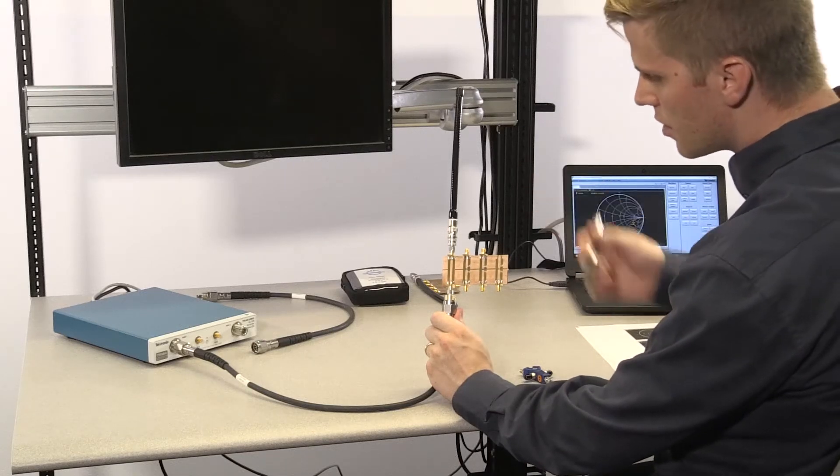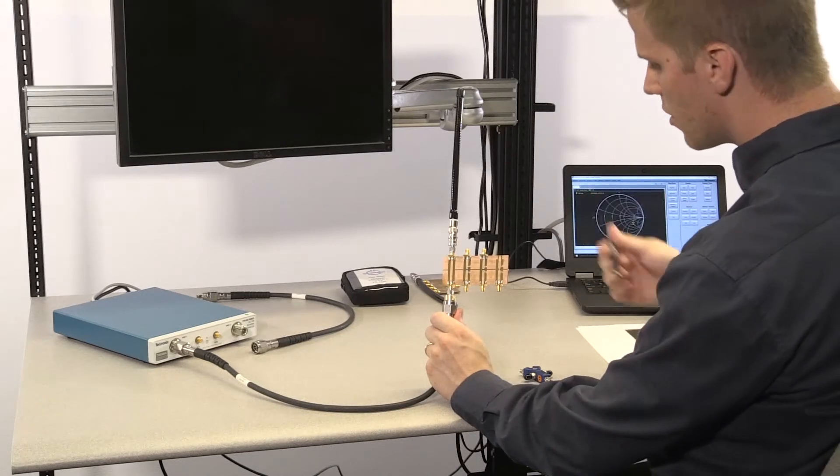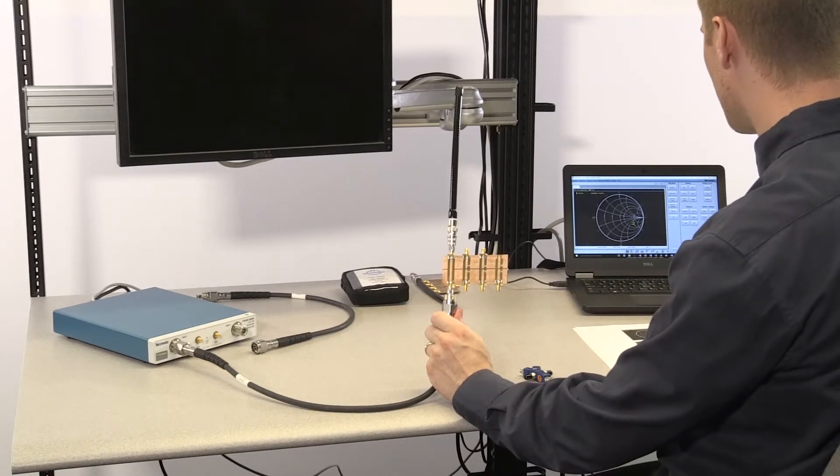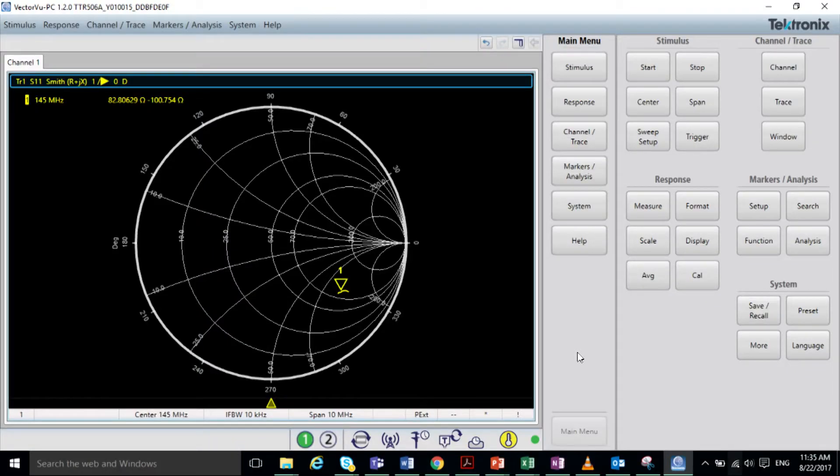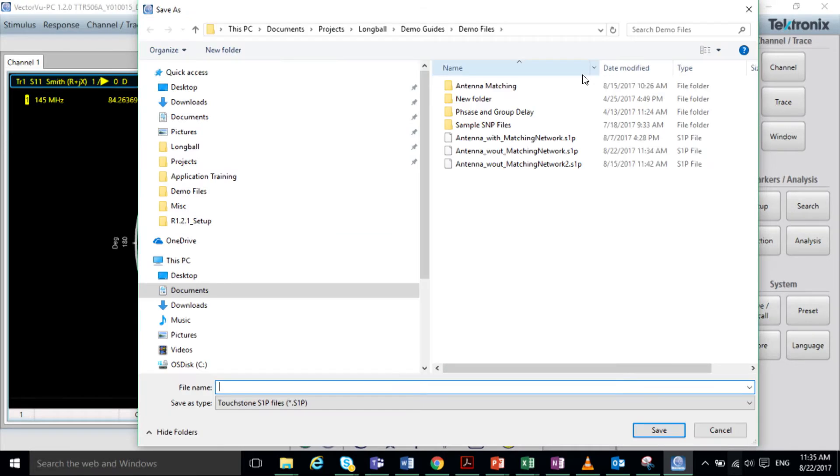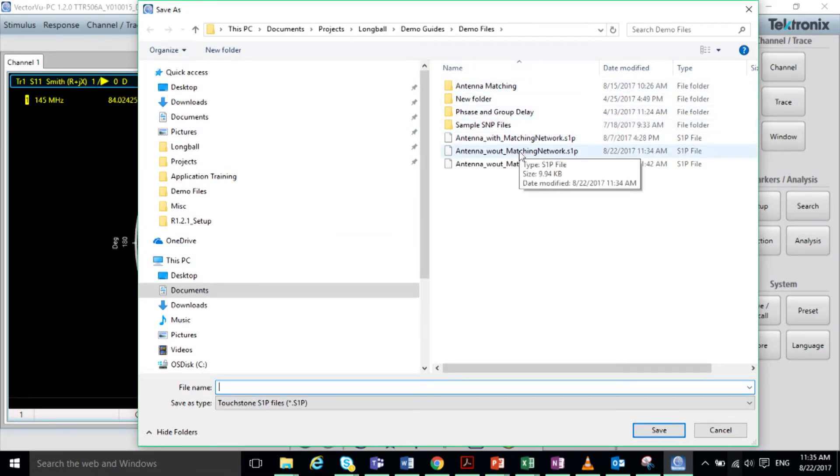So now that we're measuring the impedance of the antenna, including the feed line, let's go ahead and save the S-parameter file so that we can export it to our simulation software. So to save the S-parameter file, I'll go to Save, Save SNP, Save the S1P on port 1, and then I'll overwrite a file that I created recently. And this will be the unmatched case.